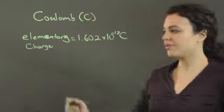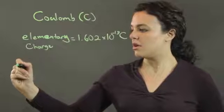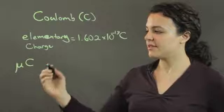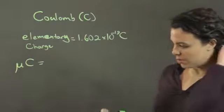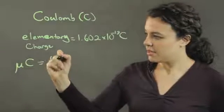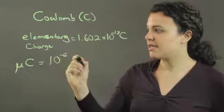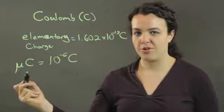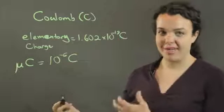A microcoulomb, which we write like this, is equal to 10 to the minus 6 coulombs. In fact, the prefix micro means 10 to the minus 6.